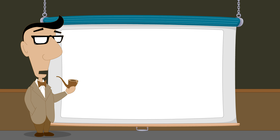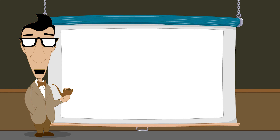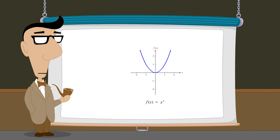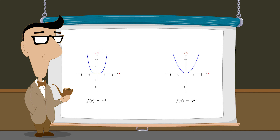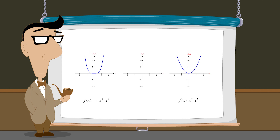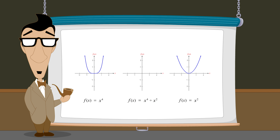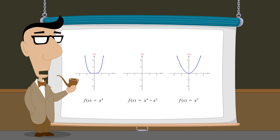So let's add some monomial functions and see what kind of graphs are produced. As an example, let's add x-squared and x to the fourth power. This produces a polynomial with two terms, otherwise known as a binomial. When we add functions, the value of the resulting function is the sum of the individual functions at each value of x.